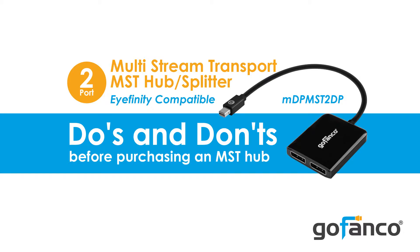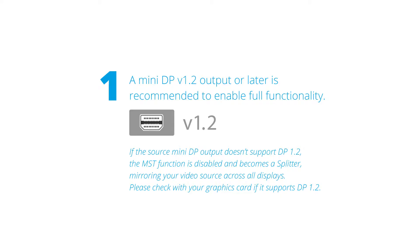But before you use this product, there are a few do's and don'ts that you should know about so that this product can work properly. Number one: a mini DisplayPort or DisplayPort version 1.2 output or later is recommended to enable full functionality. If the source mini DisplayPort or DisplayPort output doesn't support DisplayPort 1.2, the MST function is disabled and becomes a splitter, mirroring your video source across all displays. Please check with your graphics card to see if it supports DisplayPort 1.2.